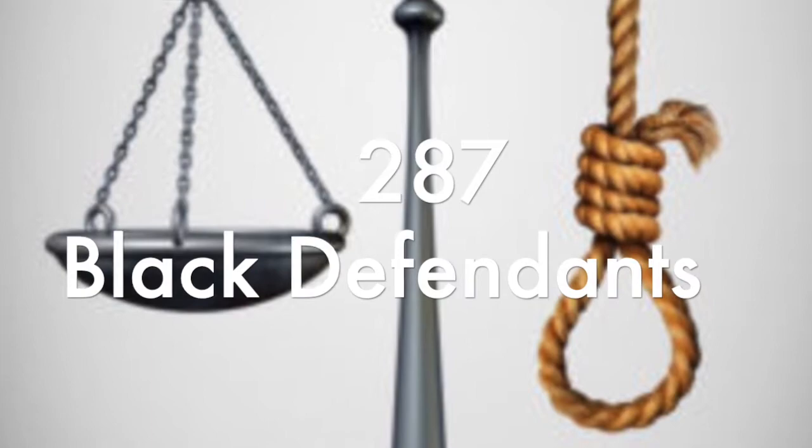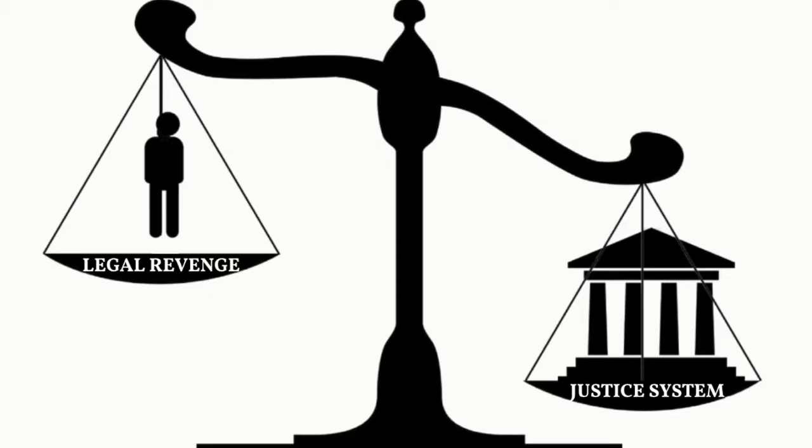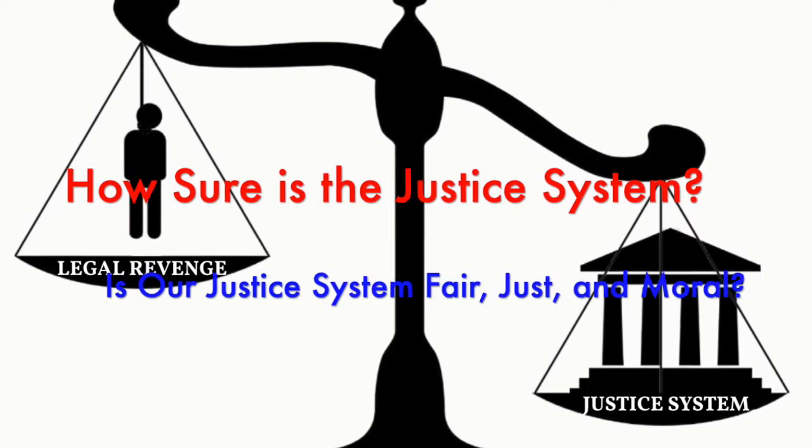Since 1976, 287 Black defendants have been executed for the murder of a white victim, compared to 20 white defendants executed for the murder of a Black victim. There are two important questions to ask ourselves: How sure is the justice system, and is our justice system fair, just, and moral?